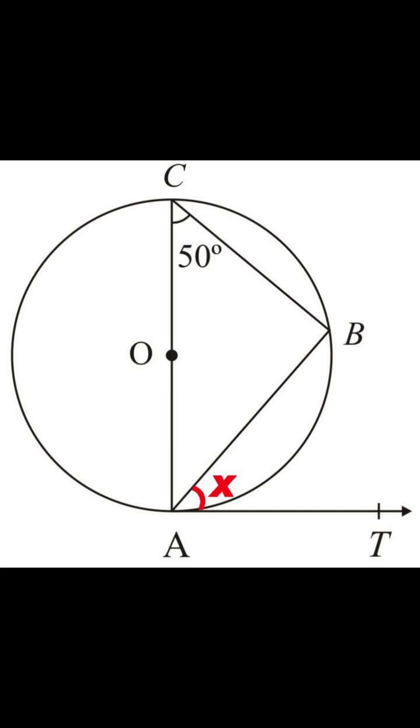Here is the setup. We have a circle with center O and the triangle is inscribed and you're told the angle C is 50 degrees and the line AT is a tangent to the circle at point A.